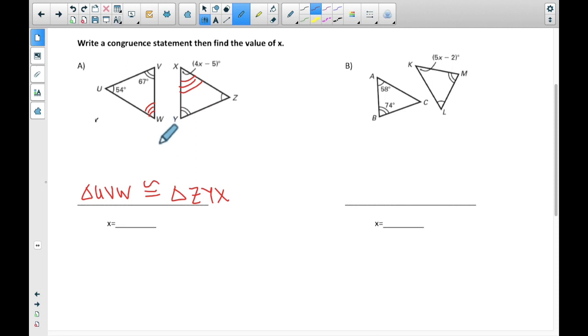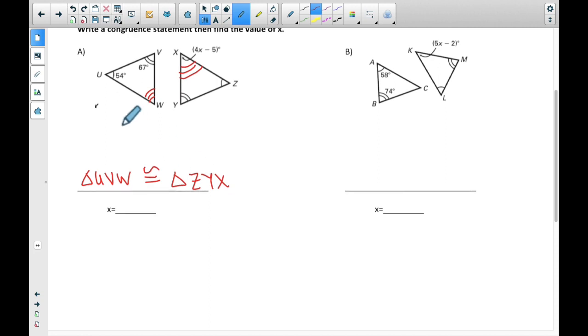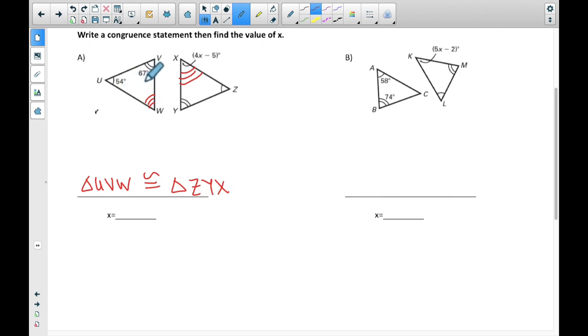And the reason I say that's unfortunate is that we have some math to do to figure this out. We're going to have to do a couple of different equations. I'm going to start with 54 plus 67 plus W is equal to 180, right? Because we know a triangle has to add up to 180.